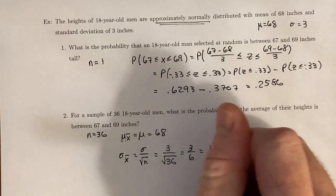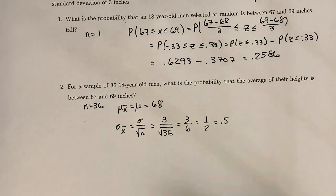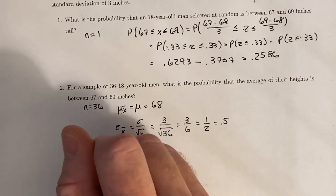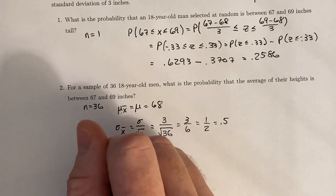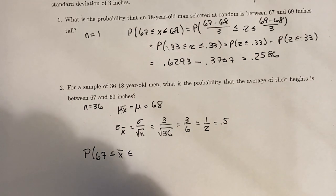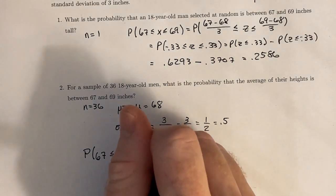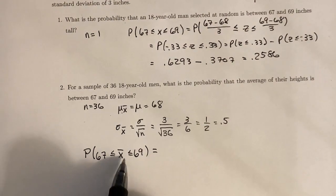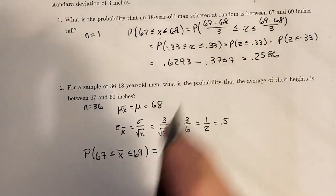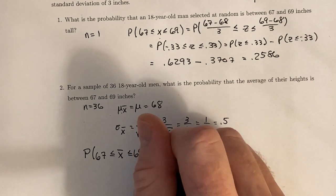All right. I'm going to write that as a decimal, 0.5. Now, we want to find the probability that the average of these 36 people have a height that's between 67 and 69 inches. That's why I'm using the x bar instead of the x, right? Because we're looking at the average.